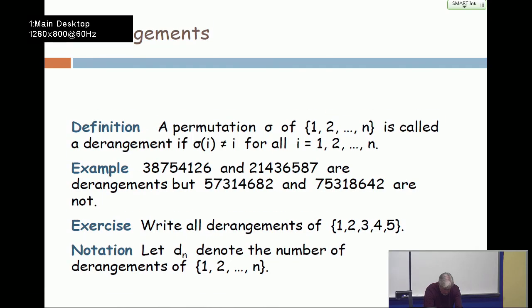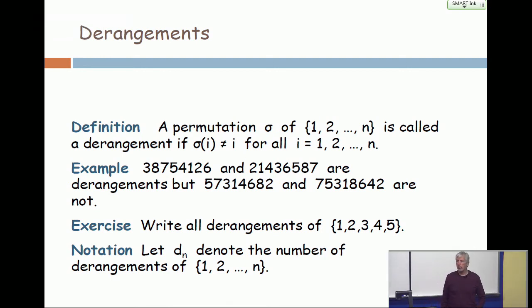We're going to develop an inclusion-exclusion formula. And we'll call it dn. dn is the number of derangements of the integers 1 to n. And we want to get a formula and be able to do it for all n quickly.